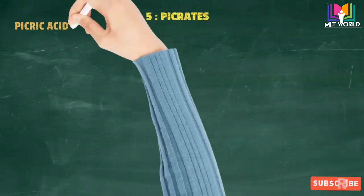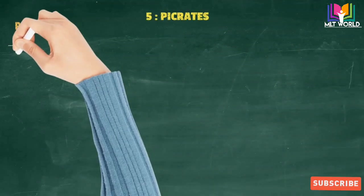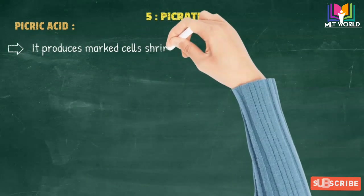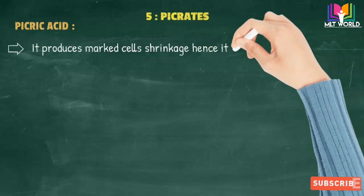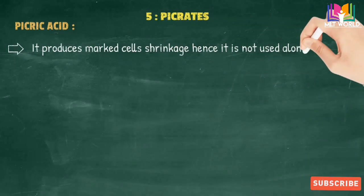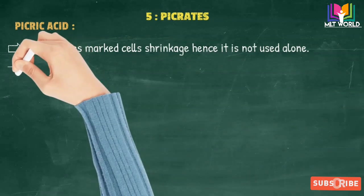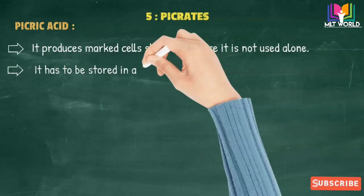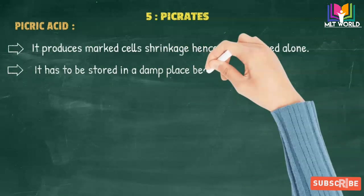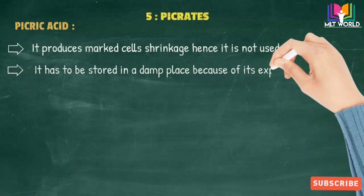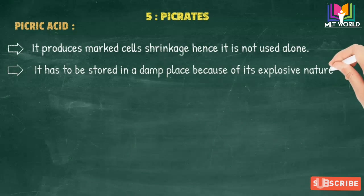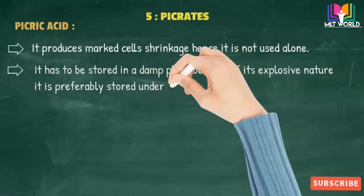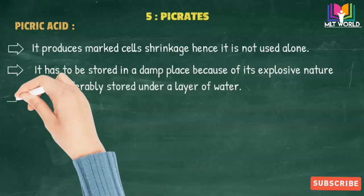Last group is picrates. In picrates, picric acid is used. Picrates are good fixatives for connective tissues and can preserve glycogen well, but they produce marked cell shrinkage. Hence, it is not used alone. It has to be stored in damp places because of its explosive nature and is preferably stored under a layer of water.